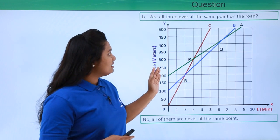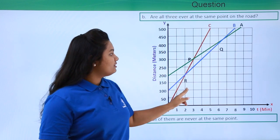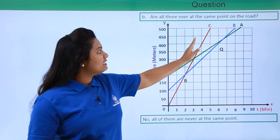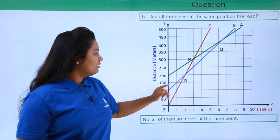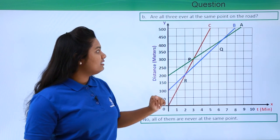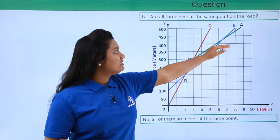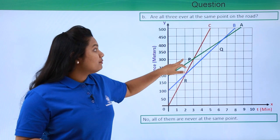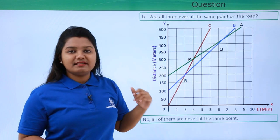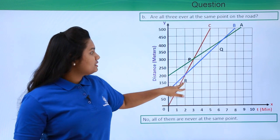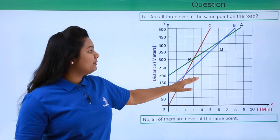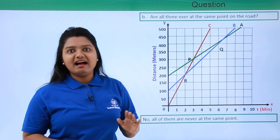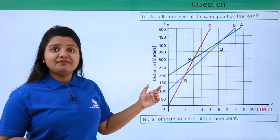Here we see there are three points at which these lines meet each other. Point P is where C and A meet, point R is where B and C meet, and point Q is the intersection point of B and A. At P, C and A are at the same place; at R, C and B are at the same point; and at Q, A and B are at the same point on the road.